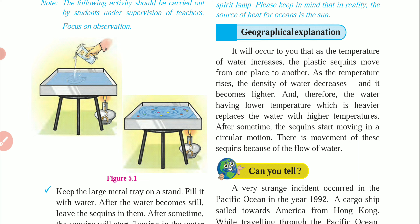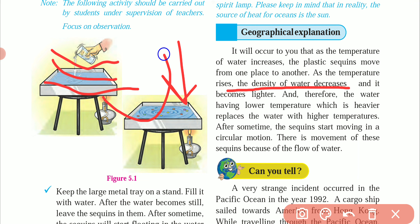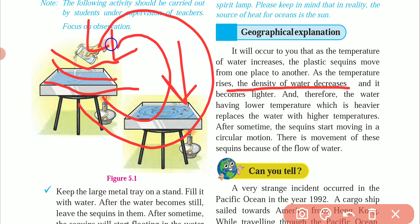Let us see the geographical explanation. As the temperature of the water increases, the plastic sequins move from one place to another. As the temperature rises, the density of the water decreases and it becomes lighter. The warm water rises up and the cold water sinks, and the water flows in a circular loop — it rotates and the water starts to move.